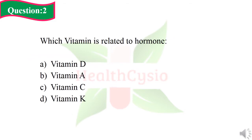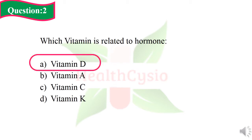Question 2: Which vitamin is related to hormone? Option A: vitamin D. Option B: vitamin A. Option C: vitamin C. Option D: vitamin K. The right answer of Question 2 is Option A, vitamin D.